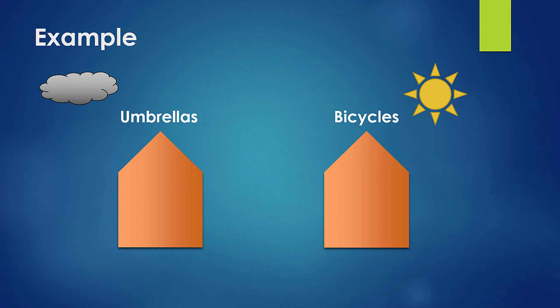There's a famous economic example that illustrates this. Imagine there are two businesses on a beach: one sells umbrellas and the other sells bicycles. Both businesses are heavily influenced by the weather. On rainy days, the umbrella business makes a lot of money, but makes nothing on sunny days because no one wants to buy an umbrella in the sun. The bicycle business makes a lot of money on sunny days but nothing on rainy days. So both businesses experience revenues and profits that fluctuate a lot based on the weather.